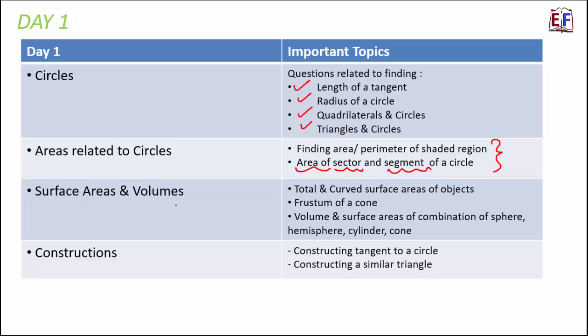Surface Areas and Volumes is a lesson many students find complicated, but it is more logical than difficult. You need to be clear with concepts and apply thought process to solve questions. It is formula-based, so revising formulas is very important. You often get questions with combinations of different shapes like sphere, hemisphere, cylinder, cone, and frustum. For shapes including cube, cuboid, sphere, hemisphere, cylinder, cone, and frustum of a cone, you should know how to find total surface area, curved surface area, and volume.